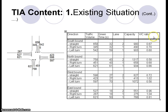You can see almost all approaches are still okay because the volume-to-capacity ratio is below 1, meaning traffic volume is less than capacity — except for the right-turning westbound and eastbound traffic. The other approaches show extra capacity, so we can actually adjust the traffic signal settings to cope with the demand.